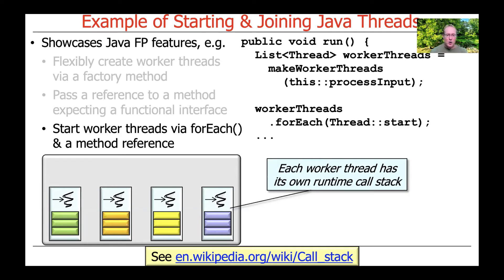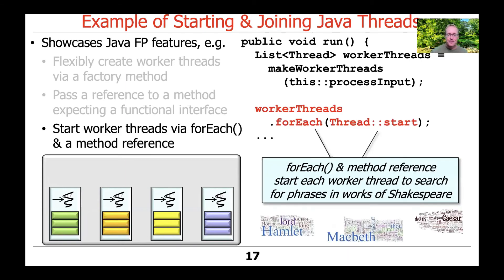The diagram shows a process — that gray rounded rectangle — with a bunch of threads, in this case four of them, running inside. We're going to tell every one of the worker threads to start, using worker threads dot for each, which starts each thread running. Each thread starts by running the process input method, which in turn searches for phrases in the work of Shakespeare.